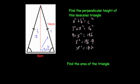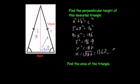To work out x, we square root both sides: x equals the square root of 187, which equals 13.67 and so on centimetres. That's equal to 13.7 centimetres to one decimal place.